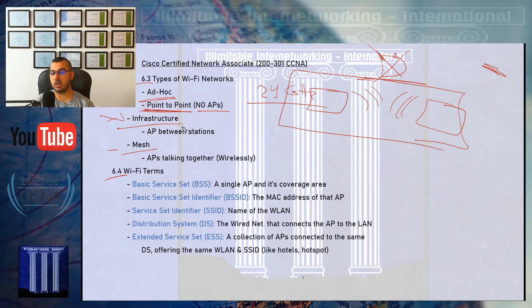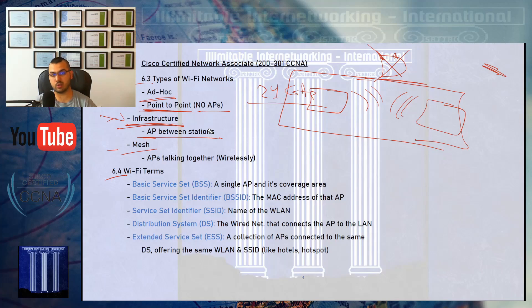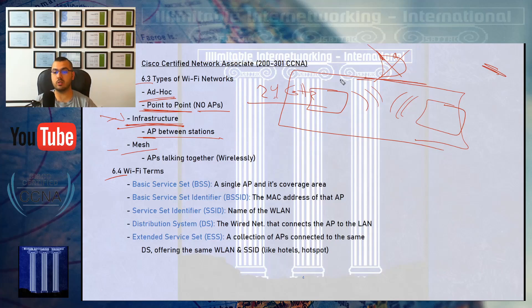The other type is infrastructure, which I talked about in the previous video. Infrastructure is all about having an access point between stations. No matter how many access points there are, the common rule is that stations connect to the access point as their first gateway, and stations communicate with each other through the access point, not directly. The access point is the central responsible party.